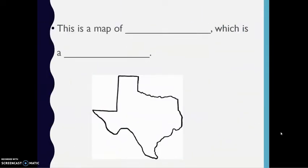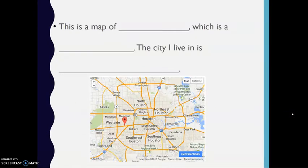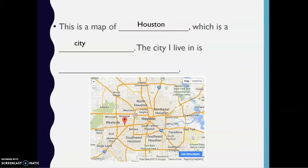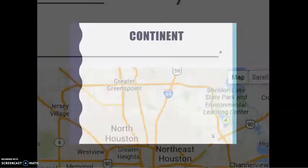This is a map of Texas, which is a state. This is a map of Houston, which is a city. The city I live in is Richmond.